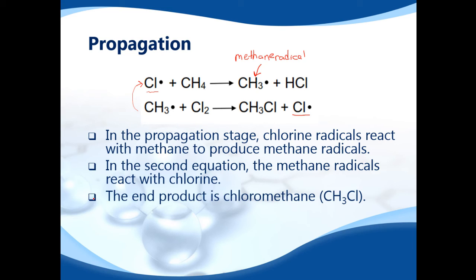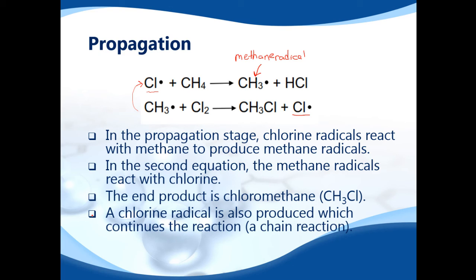The end product is chloromethane, CH3Cl. A chlorine radical is also produced, which continues the reaction, and we call it a chain reaction.